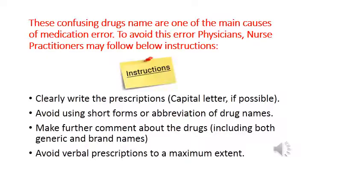These confusing drug names are one of the main causes of medication error. To avoid this error, physicians and nurse practitioners may follow the below instructions: First, clearly write the prescription and use capital letters whenever possible. Second, avoid using short forms or abbreviations of drug names. Third, make further comment about the drug including both generic and brand name. Fourth, avoid verbal prescriptions to a maximum extent.